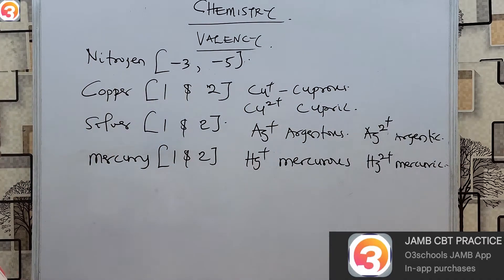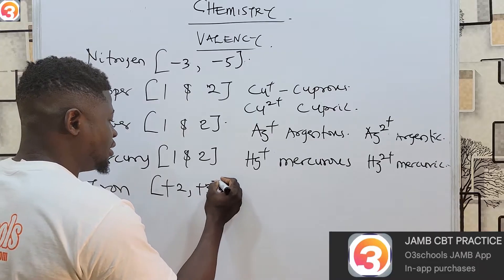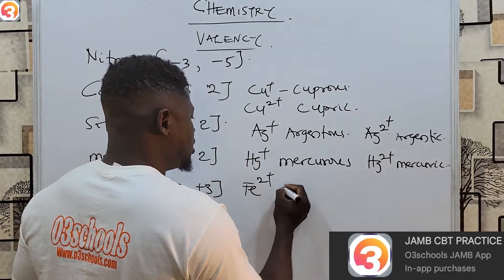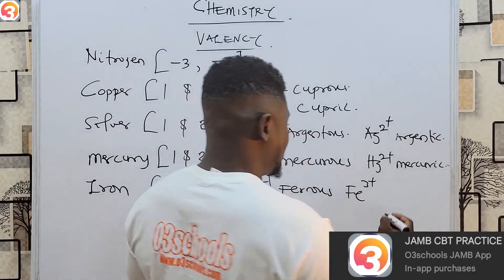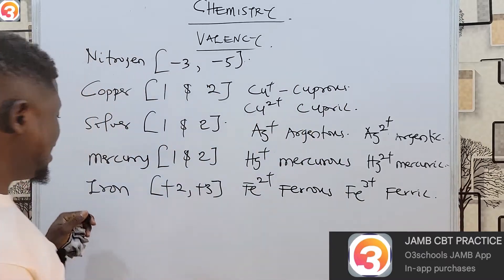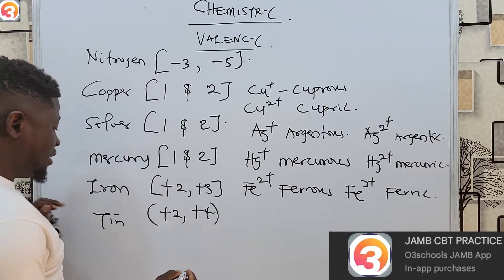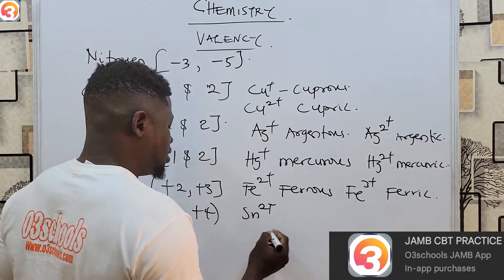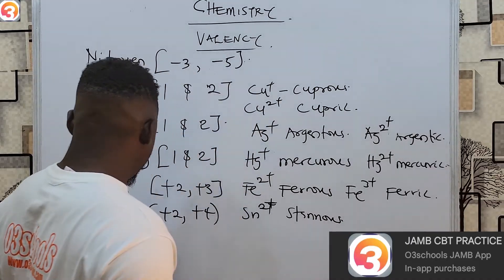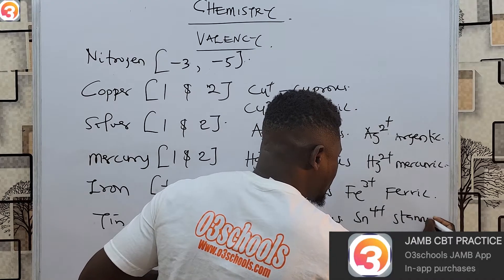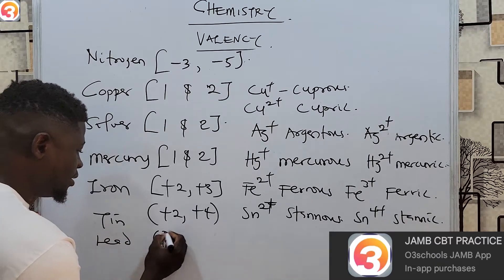Iron has a variable valency of plus two and plus three. Fe²⁺ is called the ferrous ion, while Fe³⁺ is called the ferric ion. Tin (Sn) has a valency of plus two and plus four. Sn²⁺ is called the stannous ion, while Sn⁴⁺ is called the stannic ion.